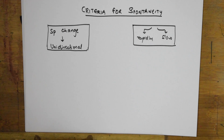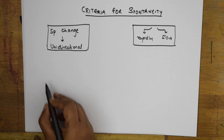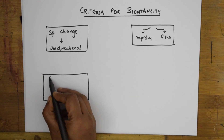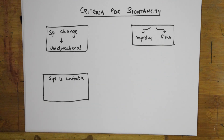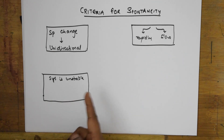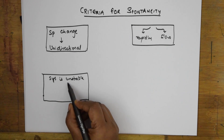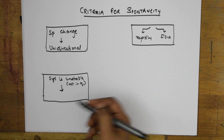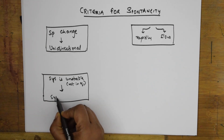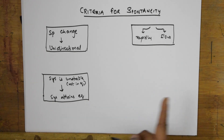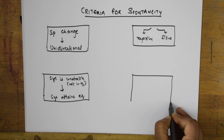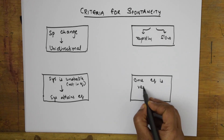The third criteria: if the system is unstable — meaning it is not in equilibrium — then spontaneous change is inevitable. The change will continue in that system until it attains stability, that is, until it reaches equilibrium. The change goes on occurring in the system until equilibrium is attained. Once equilibrium is reached, no spontaneous change occurs.